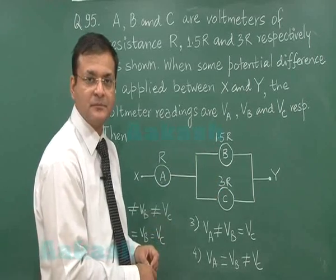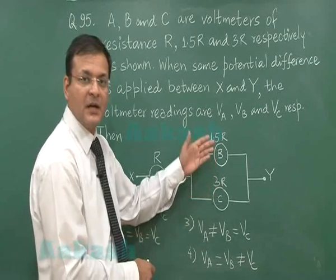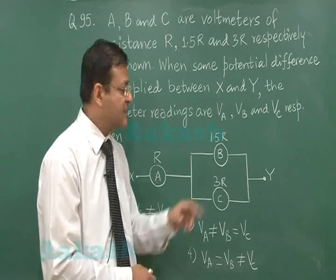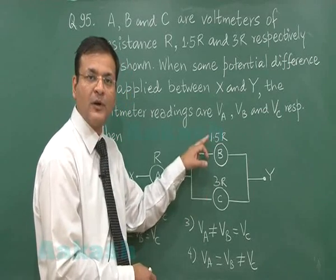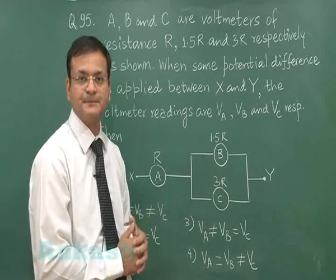Now try to see that these two resistors are connected in parallel. What is the equivalent of that? R1R2 upon R1 plus R2. That is 1.5 into 3 upon 1.5 plus 3, that will become R, isn't it?